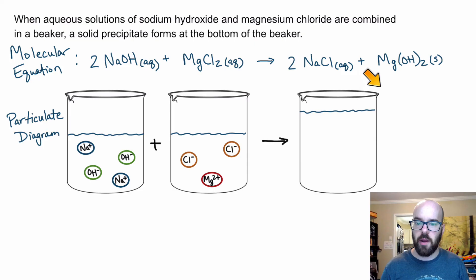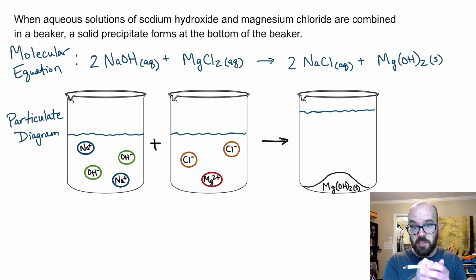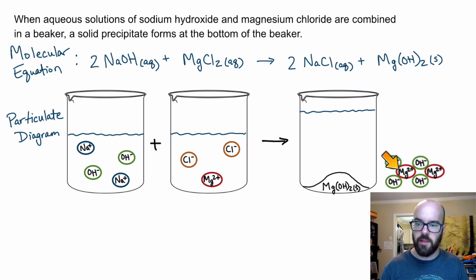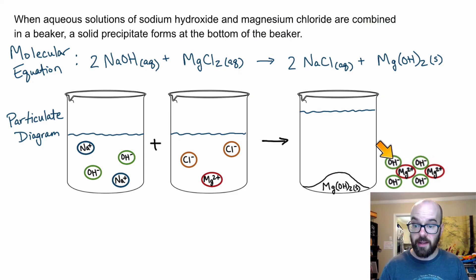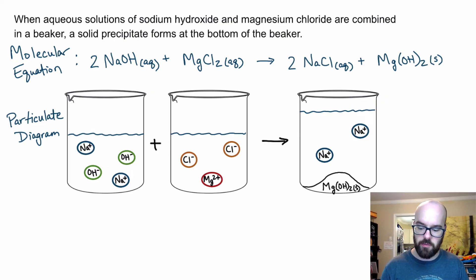Over in the products beaker, for my solid product I draw a lump at the bottom to represent my solid and write Mg(OH)₂. I'm not going to separate it into magnesium and hydroxide ions, because they exist together as a solid — they're not aqueous and floating around separately. Also in solution we have sodiums and chlorides remaining. I've got two sodiums so I include two sodiums, and two chlorides, so I include two chlorides.